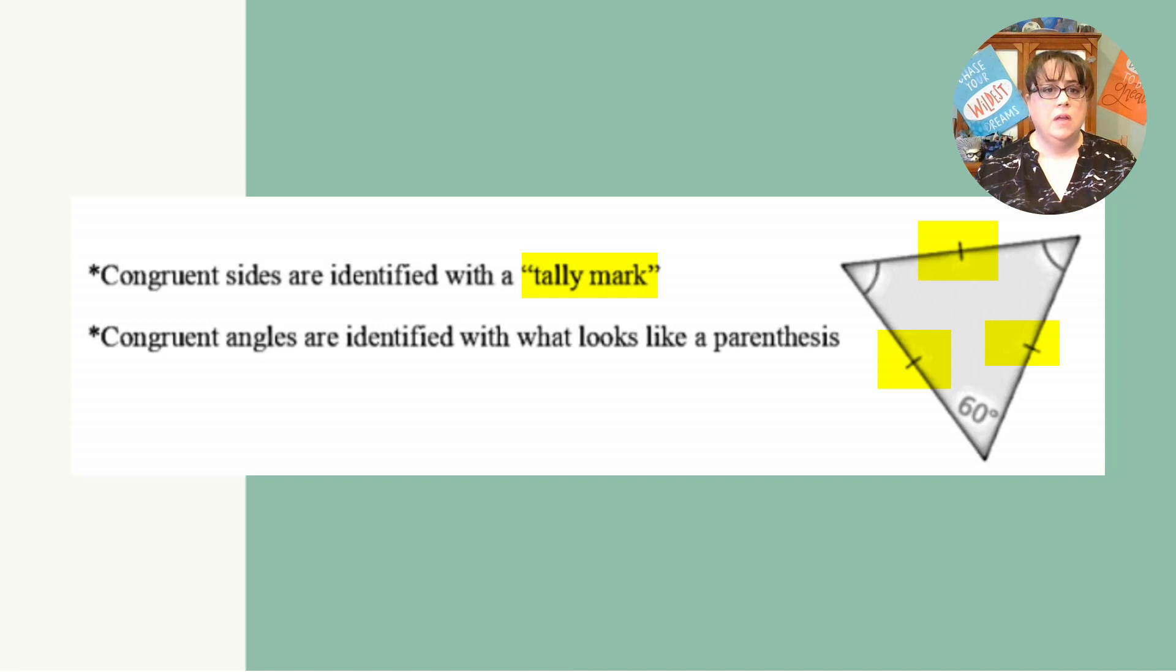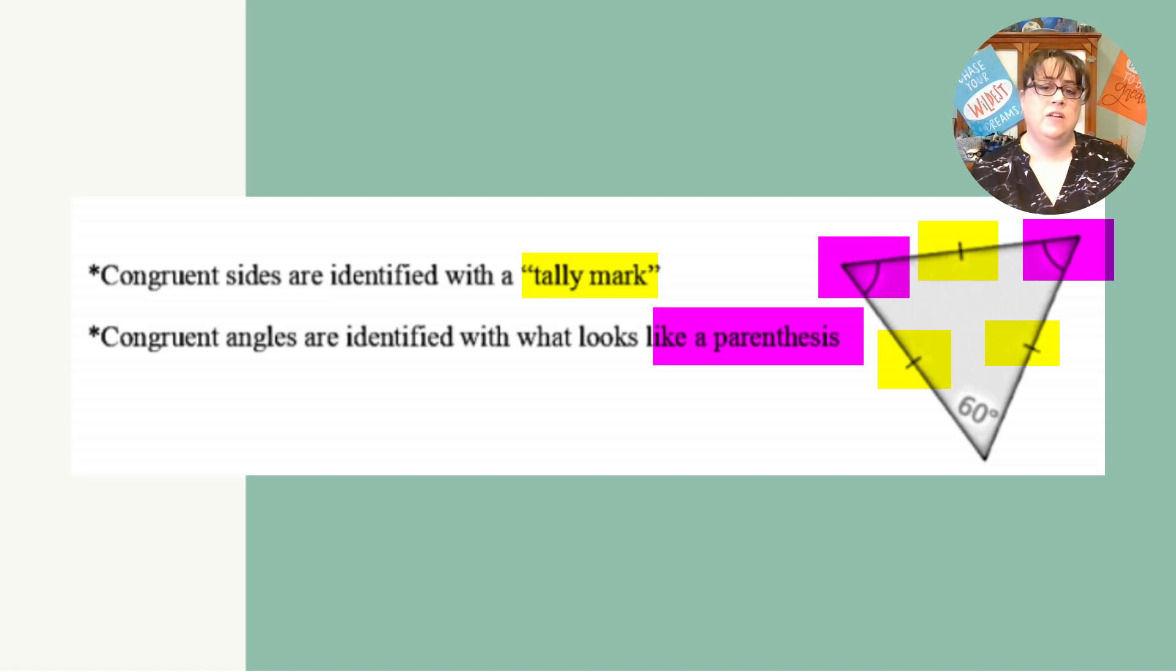When we mark sides congruent, they're marked with a tally mark, and if we're marking more than one, you'll put two tally marks, things like that. And congruent angles are identified with these things that look like parentheses.